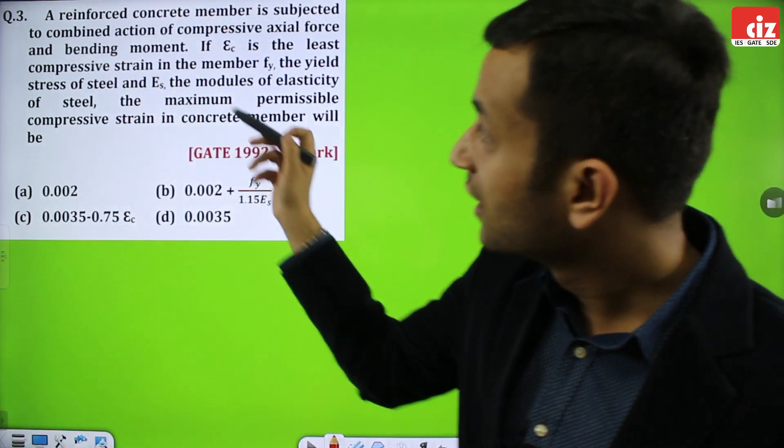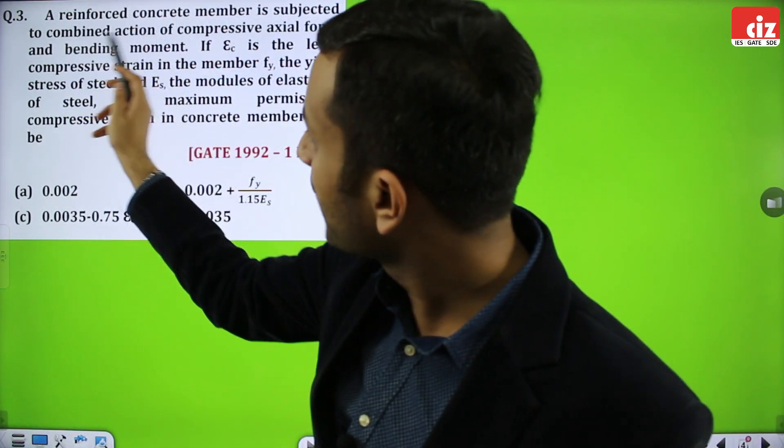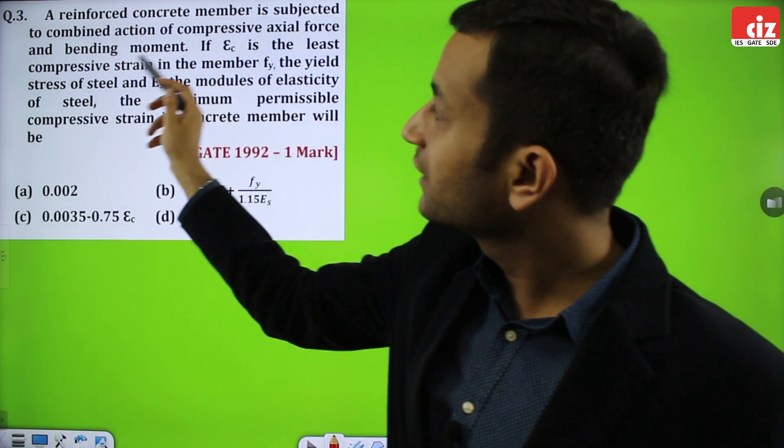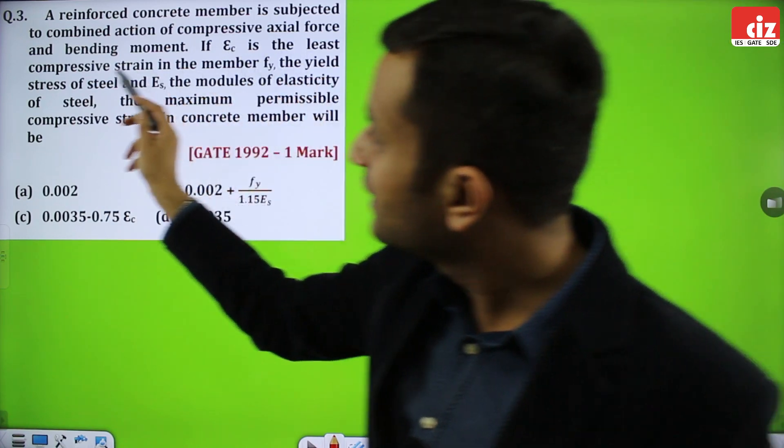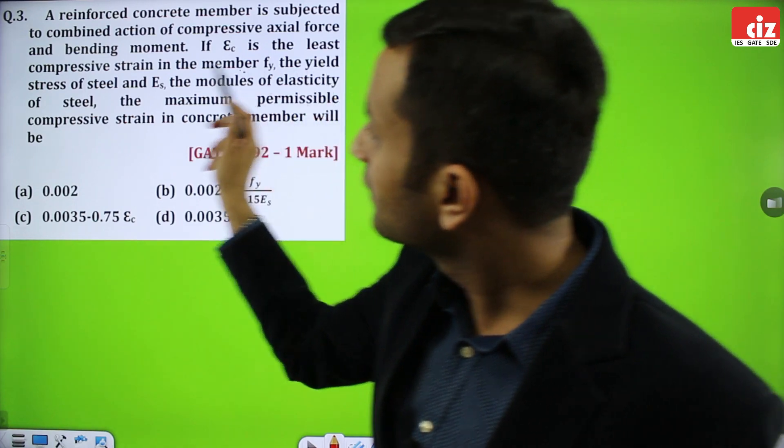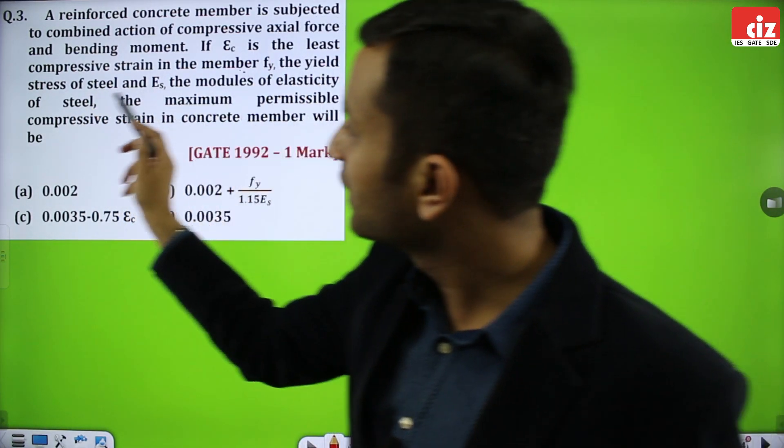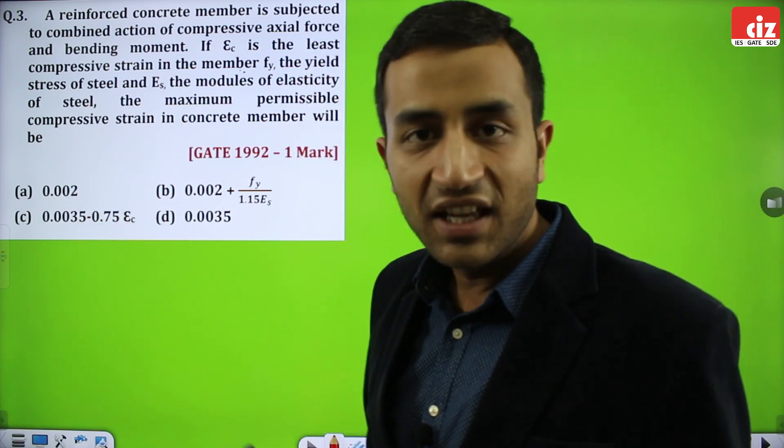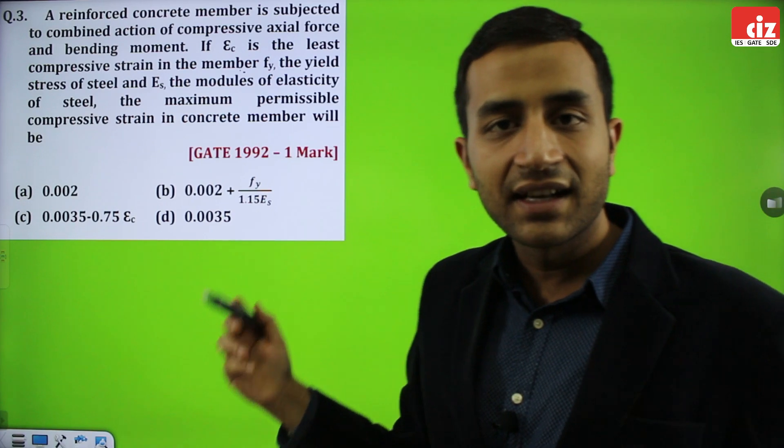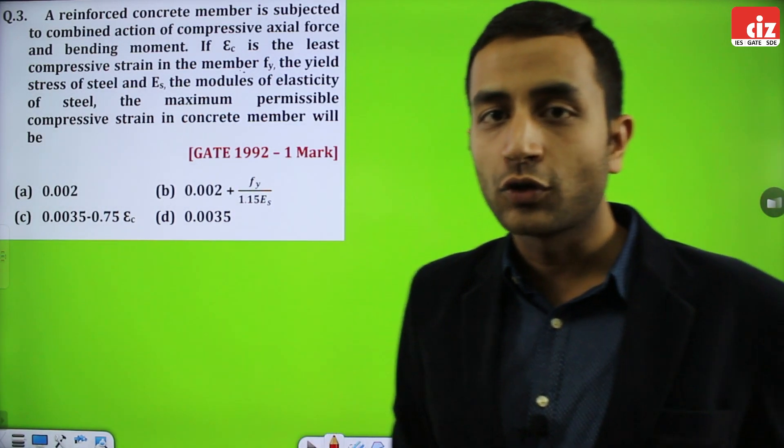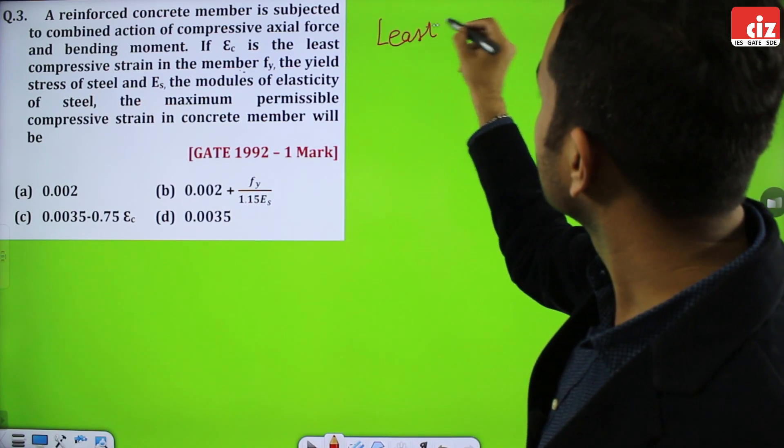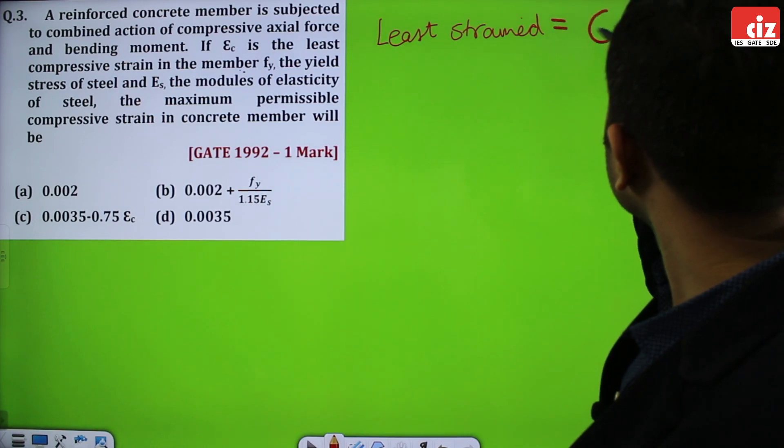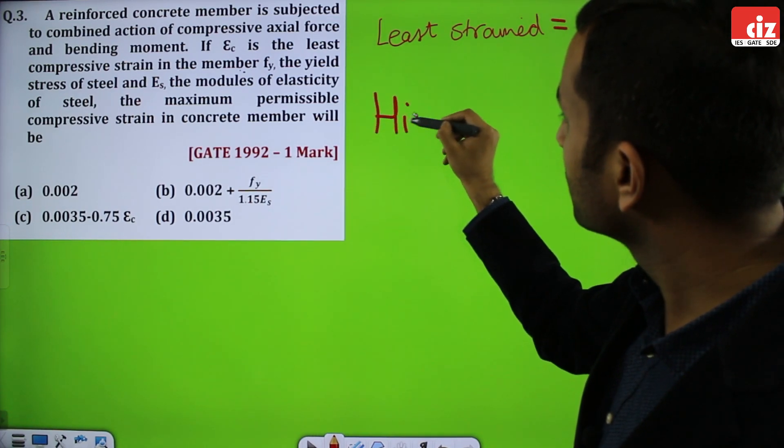Moving to the next question of the day. A RCC member is subjected to combined action of compressive axial force and bending moment. That means we are talking about a column. If epsilon C is the least compressive strain in the member, FY is the yield stress of steel, and ES is the modulus of elasticity of steel, the maximum permissible compressive strain in concrete member will be. This is a direct statement. This is a question of GATE 1992.